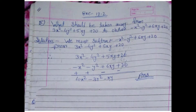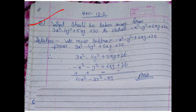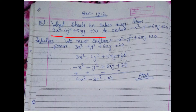Hello everyone. Today we have the fifth question of Exercise 12.2. In this question, what should be taken away from 3x squared minus 4y squared plus 5x plus 20 to obtain minus x squared minus y squared plus 6xy plus 20?